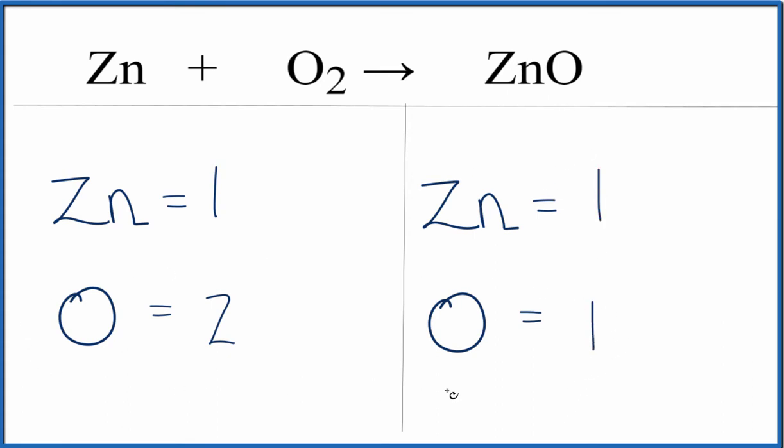So right away, we can see we'll need to put a two in front of our zinc oxide. So we have one oxygen times the two. That'll give us two oxygens. And this two applies to everything, so we have one zinc times the two. That gives us two zinc atoms.